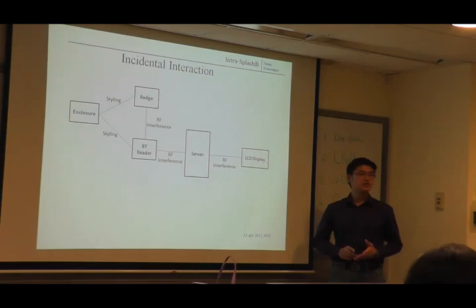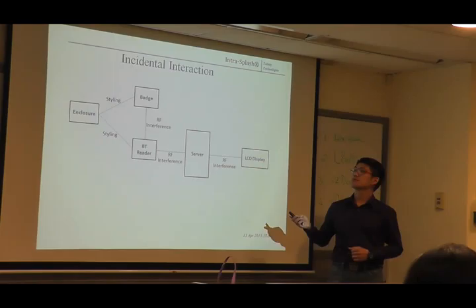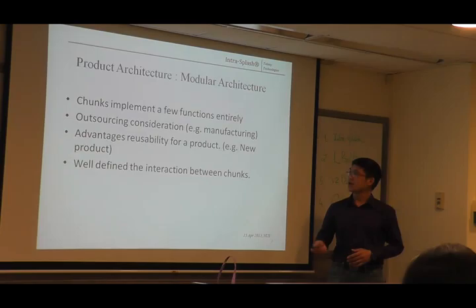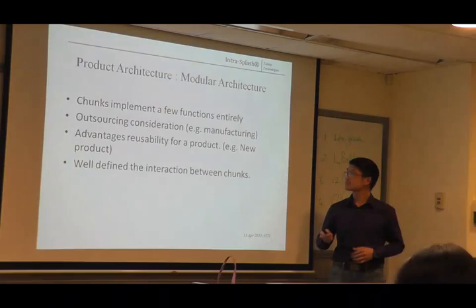Using the five chunks, we can define the incidental interaction easily. This is how we define it. In summary for the product architecture, one thing I need to highlight is about the advantage that we use for the product. We use one of the chunks to define a new generation product, and we'll talk more about it later on.